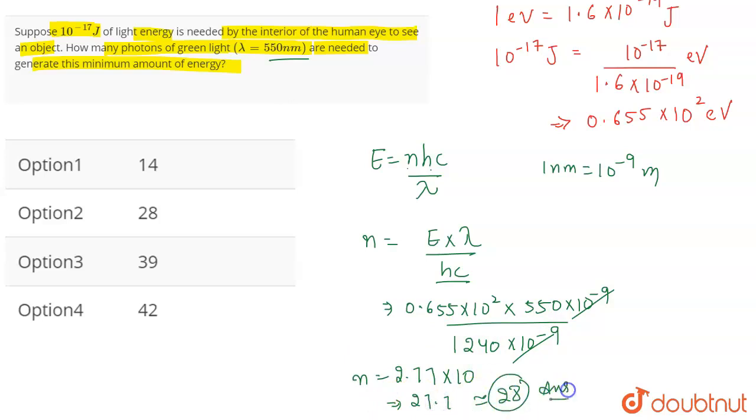So, 28 photons of green light are needed to generate the minimum amount of energy. The correct answer for this question is going to be option 2, which is 28.